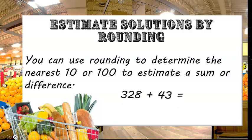If we round to the nearest 10, 328 rounds to 330, and 43 rounds to 40. Those numbers are much easier to add. 330 plus 40 equals 370. So that means 328 plus 43 is about 370.